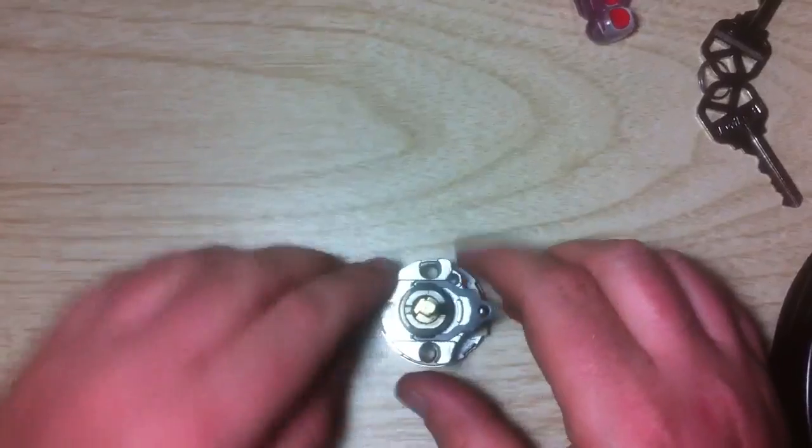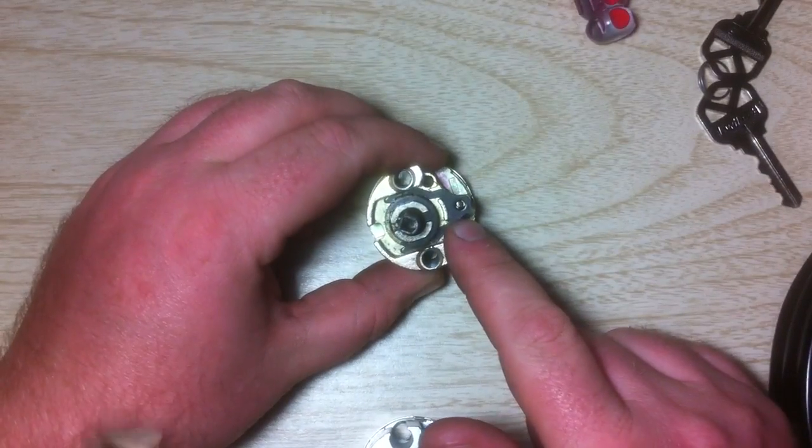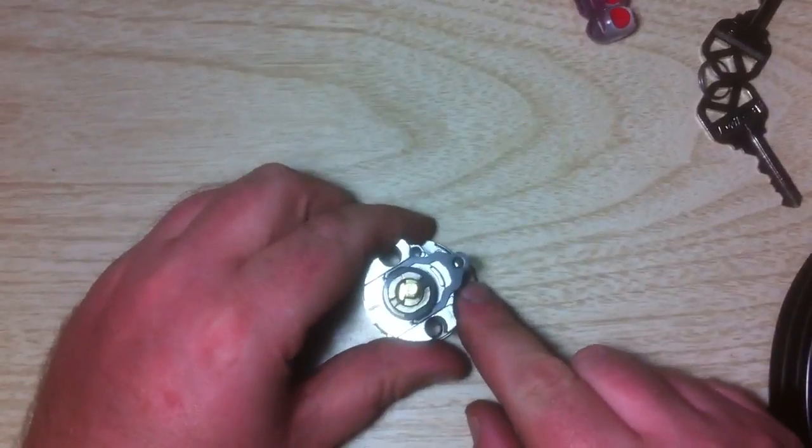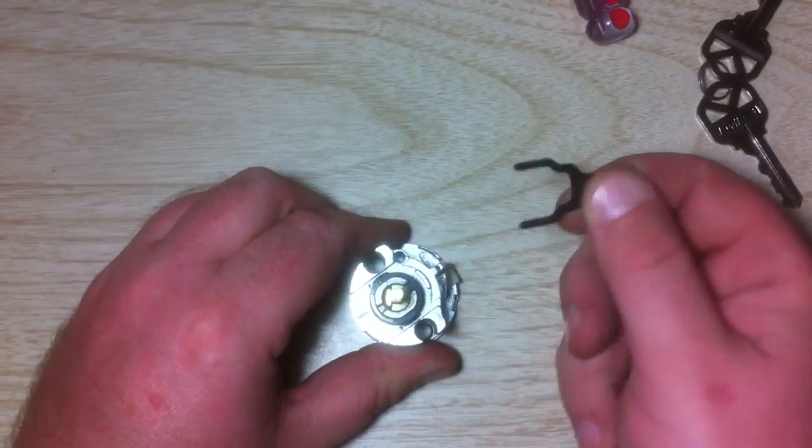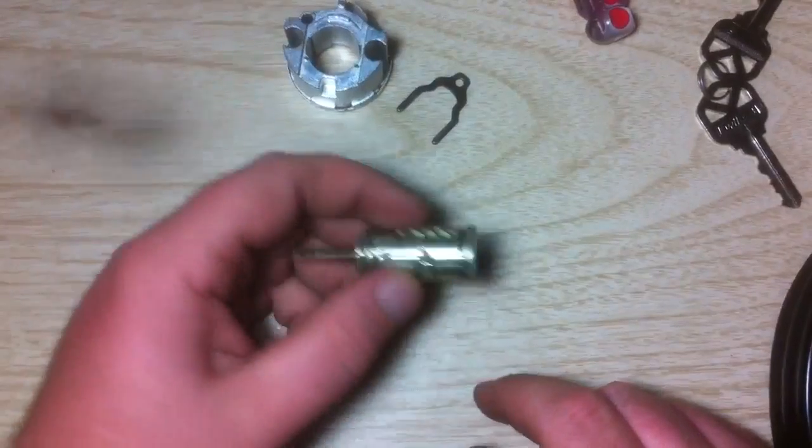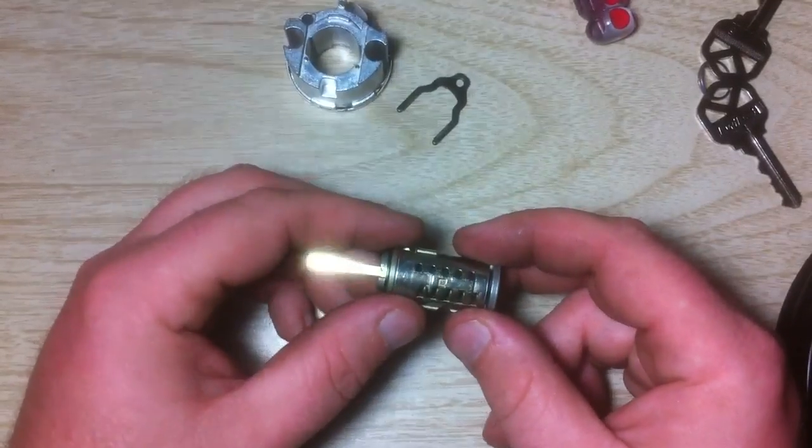So what we're going to do is disassemble this deadbolt here. It's got this black clip. It's a little tricky to get off the lock, so I went ahead and got it started on this one just to save a few minutes here. So you remove this clip, the housing will then come off from around the plug, and then what you have is your plug cylinder or your lock plug.